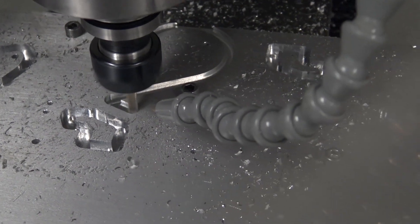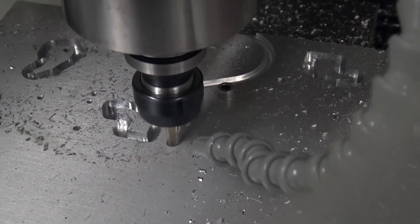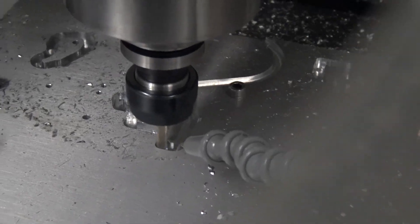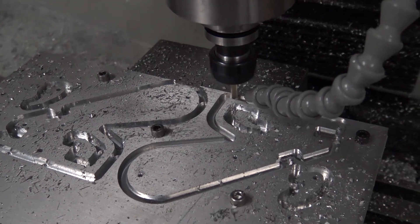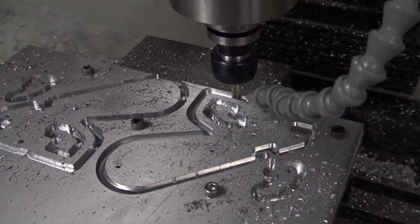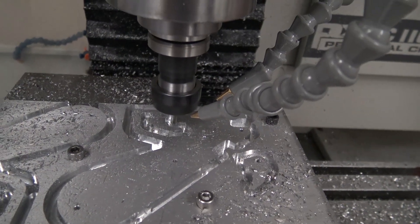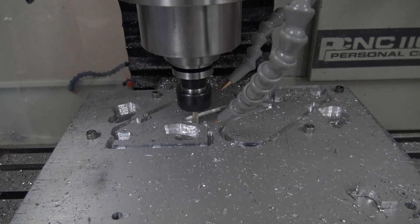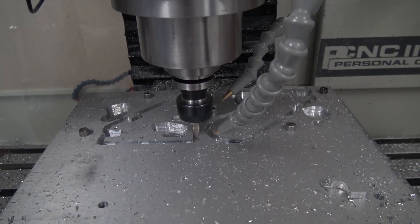I'm going to use an eighth-inch end mill to get some of the tighter radiuses. And then this is the final finishing pass. You can kind of see it lift up and shorten up those tabs a little bit.